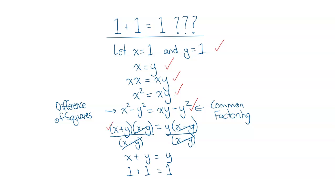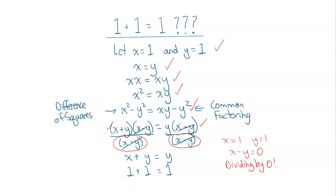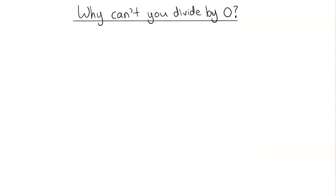The issue comes on this line. The top is fine by factoring it, but the bottom is the issue. Go back: what did we let x and y be? Those are each equal to 1, so 1 minus 1 is equal to 0. We're dividing by 0 — that is not allowed in math. You've probably had your math teacher tell you that, but why can't we divide by 0? That's what we're going to dig into now.